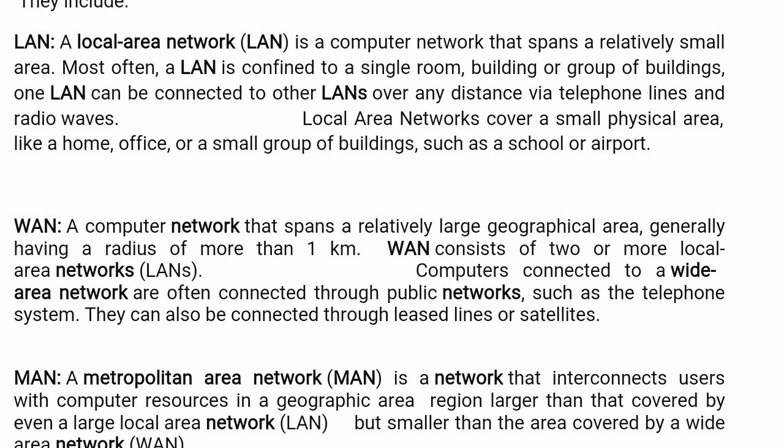Usually, this WAN network is used for public networks such as telephone systems. This WAN network is also connected via leased lines and satellite lines. WAN — wide area network — is a type of computer network.